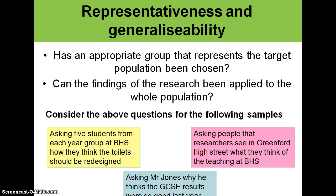The next example is asking people that researchers see in Greenford High Street what they think of teaching at Brentside High School. Researchers just pick a few people at random from Greenford High Street — this is not an appropriate group and we haven't got a representative sample. By chance the researchers might ask someone who goes to the school or has some knowledge about it, but it's quite unlikely they would give us a really good answer. We can't generalise that to anything because it's only a few people's opinion and they might not know anything about it.